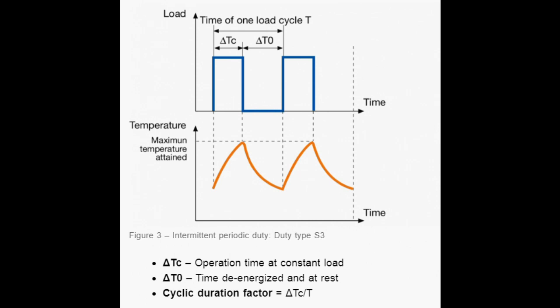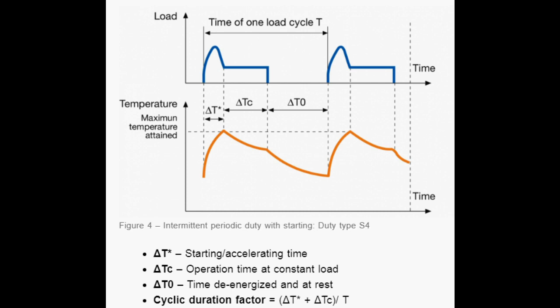From type S3 to type S8, these are periodic duties. In S3 type, we have a sequence of identical duty cycles, each including a time of operation at constant load and a time de-energized and at rest. In S3, the starting current does not significantly influence the temperature rise. In S4 type, we have a sequence of identical duty cycles, each cycle includes significant starting time, a time of operation at constant load, and a time de-energized and at rest.